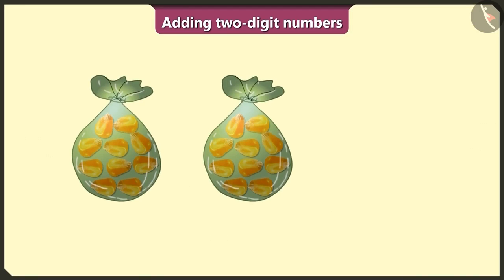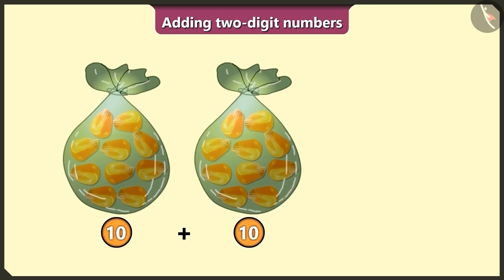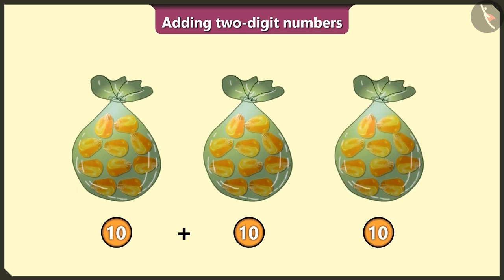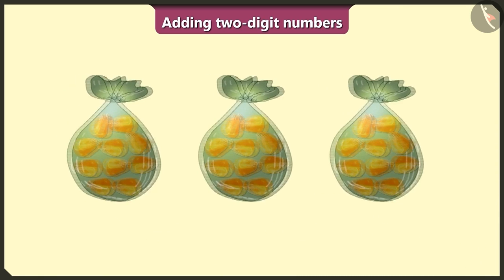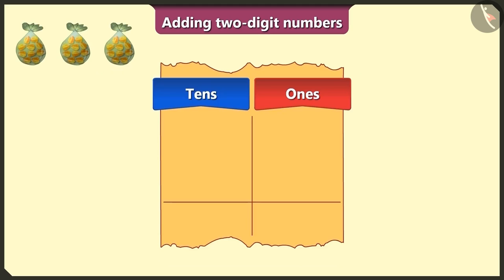See, Pilu, here we have two bags of 10 corn kernels each, that is two tens. If we add another bag of 10 kernels to this, then how many grains are there in total? If we add two tens, it becomes 20. Adding one more tens, we will get a total of 30 grains. Then how will we write this in the table of tens?